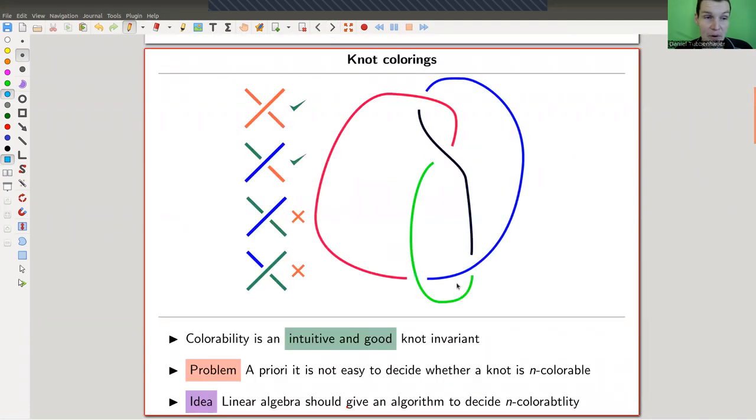So remember from last time, the coloring rules. For the three colorability, for example, you either at every crossing had the monochromatic coloring, or you had one where every color appears, and something like this is bad.